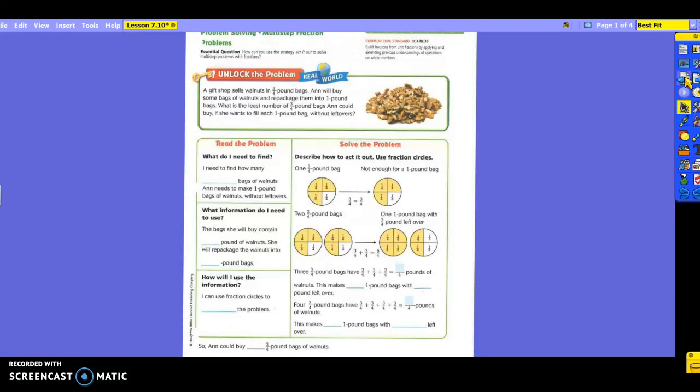So first thing is, what do I need to find? So I need to find out how many bags of walnuts Annie needs to make one pound bag of walnuts without any leftovers. Morgan, what are we searching for here? Three-fourths. Well, but what's it measured in? Okay, so three-fourths pound. We want to know how many three-fourths pound bags of walnuts she's going to need to make one pound bag of walnuts without any leftover.